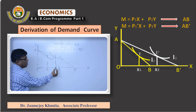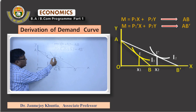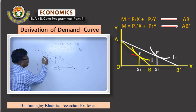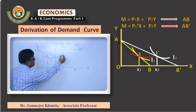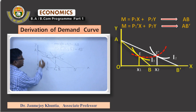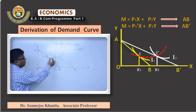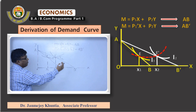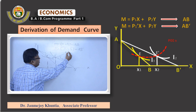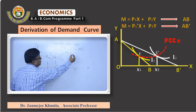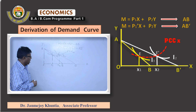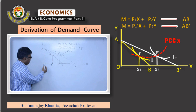When the equilibrium points move and you join them, we get a locus of all equilibrium points where X is purchased as a result of a fall in its price. This locus is called the Price Consumption Curve of good X. This is the upper part of the diagram.